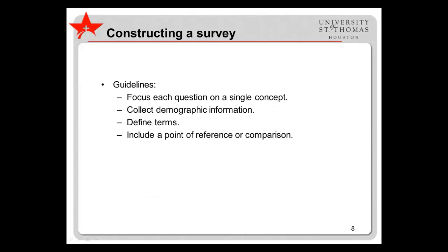When constructing a questionnaire, it is also helpful to focus each question on a single concept, so that participants don't become confused or misinterpret the question. As a rule of thumb, it is helpful to collect some demographic information, such as gender, race or ethnicity, and other variables related to your population's key characteristics. This helps to better establish the degree to which your sample is representative of the population. If there are any terms that might be unfamiliar to participants, define these. And whenever possible, include a point of reference or comparison — for example, specifying what very good, good, fair, and poor mean for specific items.